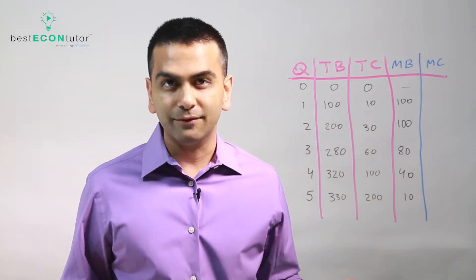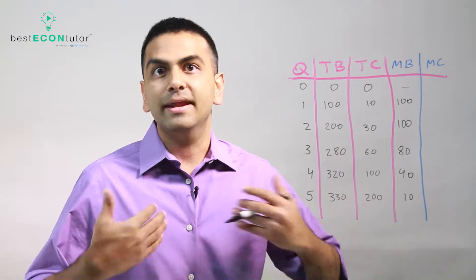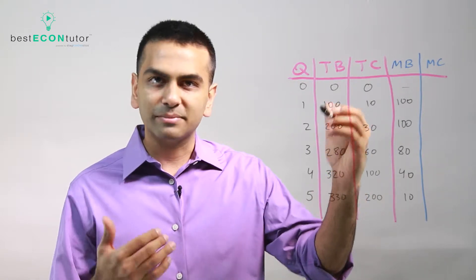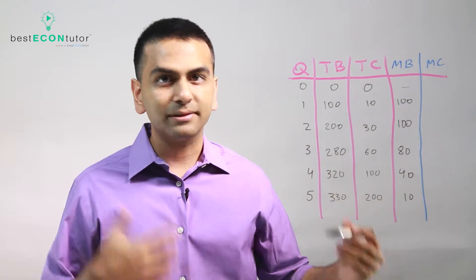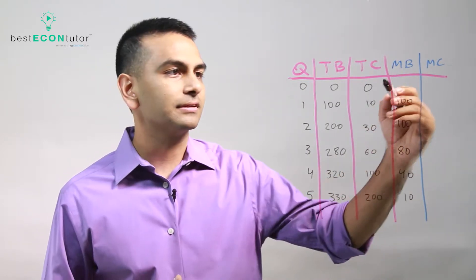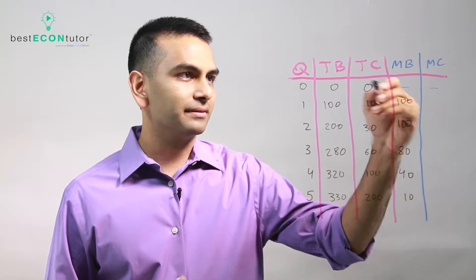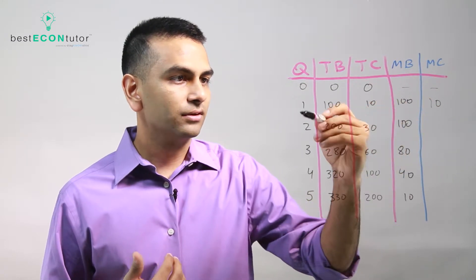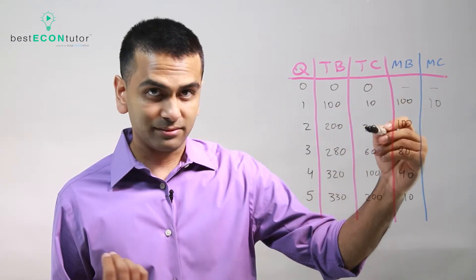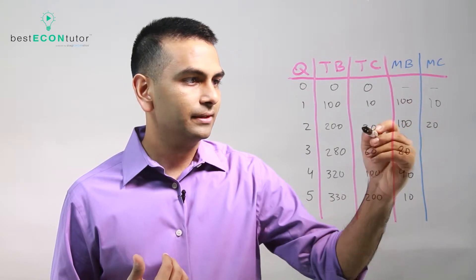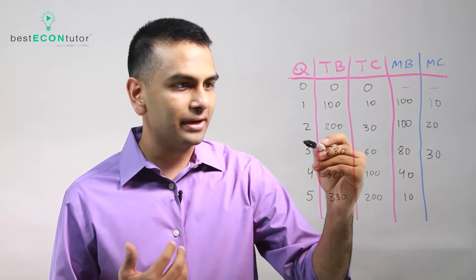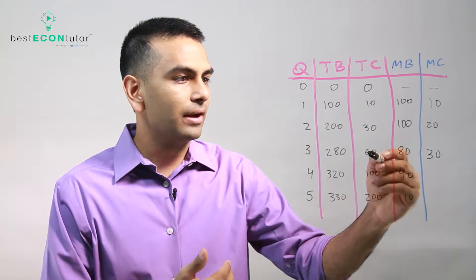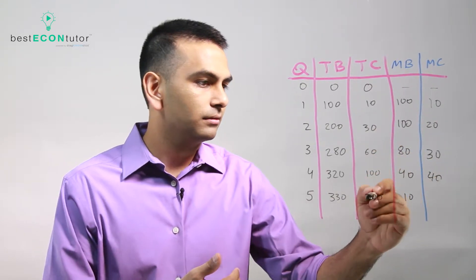Notice marginal benefit typically goes down — the more of something you do, the less the next unit adds. Going from the fourth to the fifth house didn't give you as much excitement as going from the first to the second. Marginal cost typically goes up because you get more tired. Going from zero to one, the cost is 10. Going from one to two, it went up by 20. The third house added $30 to your cost. Then it went up by 40, and then by 100.